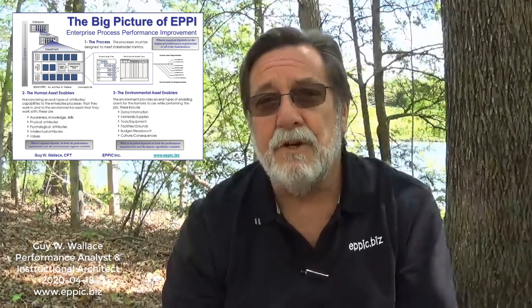There are five major components, or model sets, to the big picture of EPI. First: organizations as organized units of sets of processes.